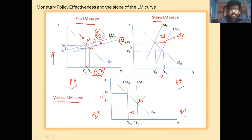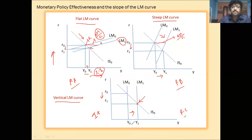Here in panel C, none of the new money is siphoned off as an increase in speculative demand when interest falls. What we have learned is that the effectiveness of monetary policy depends on the slope of the LM curve.